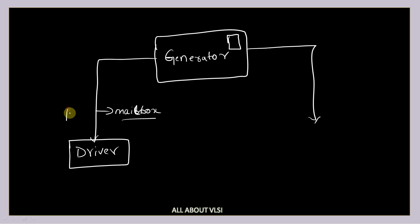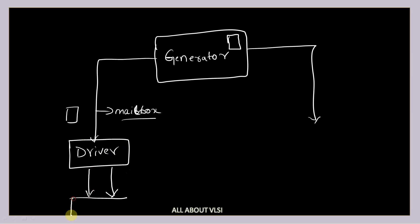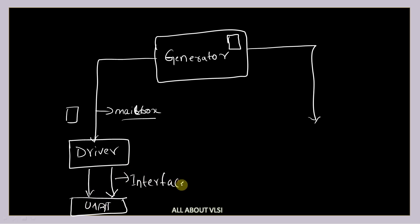After the driver receives this entire transaction object, it is going to open up the object and send these signals pin by pin to our design — our UART top — via the interface. So using the interface, our driver sends to the design pin by pin. The duty of the driver is to convert the transaction-level object into a pin-level object.